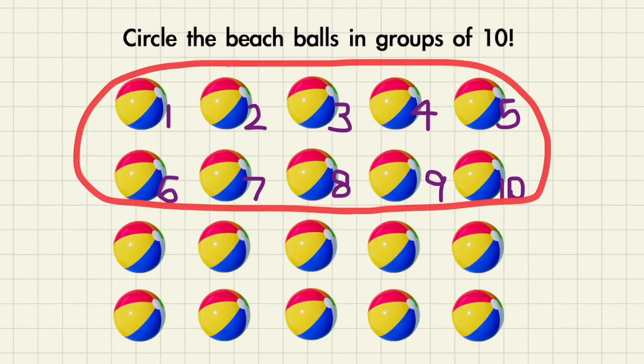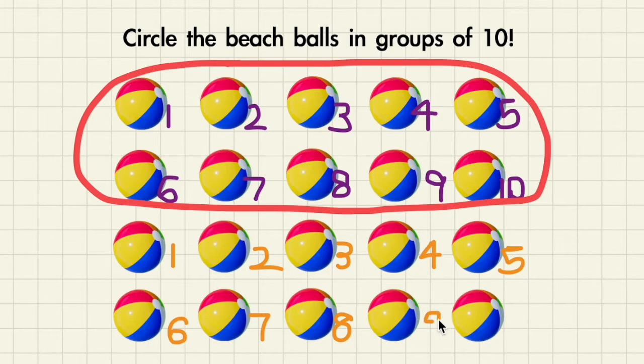And then using a different color, let's count a new group. 1, 2, 3, 4, 5, 6, 7, 8, 9, 10. Here we have another group, so let's circle that too.